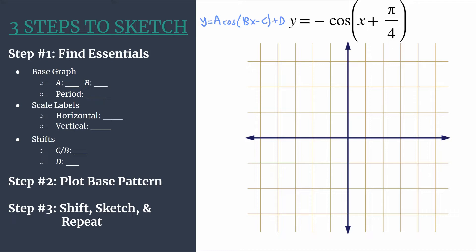All right, so let's jump in. We'll start with step one, find the essentials, and we're going to work first on the base graph and the scale labels. We see a is negative understood one. So the amplitude would be one because amplitude is a measure of distance, midline to max or min. But a is negative one. I'm going to put a star and circle it over by plot base pattern because we know we're going to need the reflected base pattern of cosine.